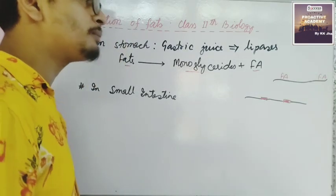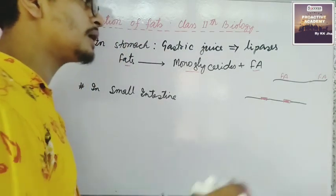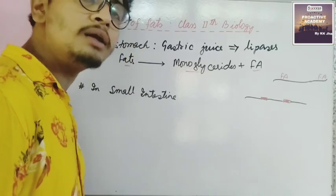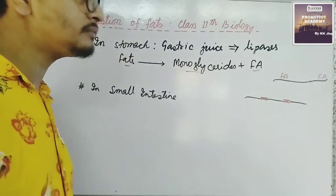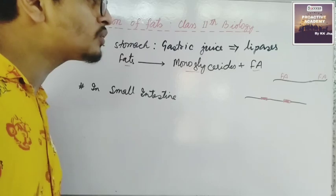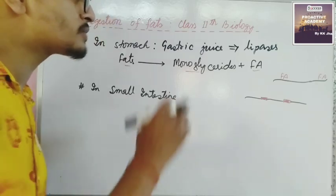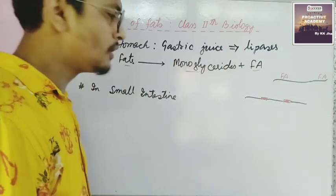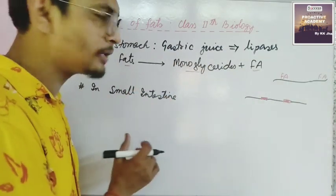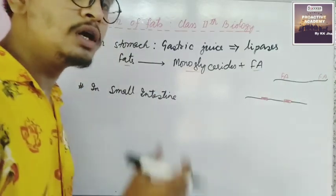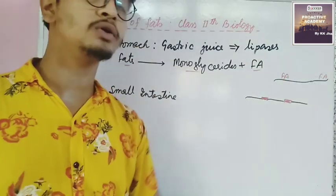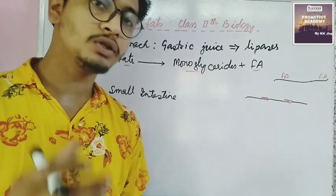However, here in the stomach, not all fats are converted into monoglycerides and fatty acids. Only a small amount of fat has been converted into monoglycerides and fatty acids, because only a very small amount of lipase is produced in the gastric juice.